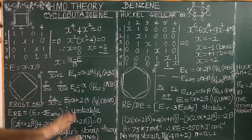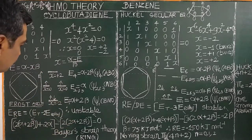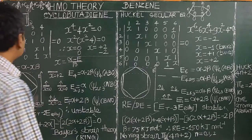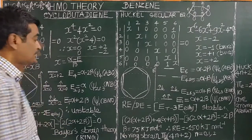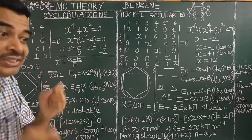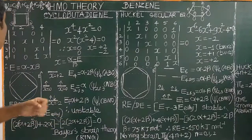This molecule is unstable — cyclobutadiene is unstable because of tremendous ring strain. The bond angles are 90 degrees, causing significant strain in the ring.